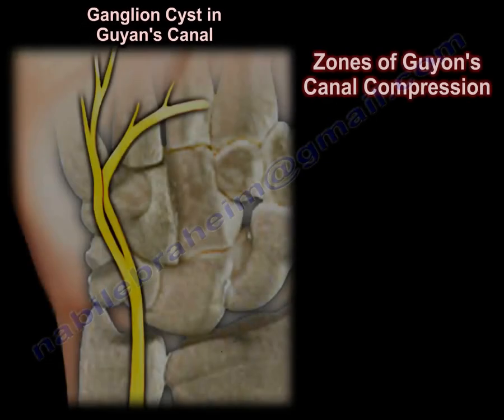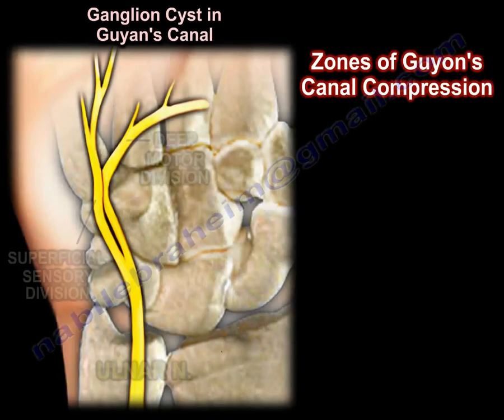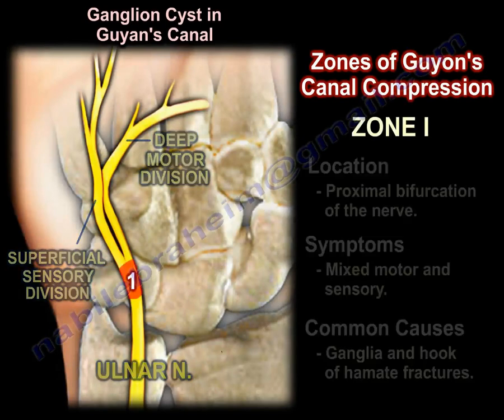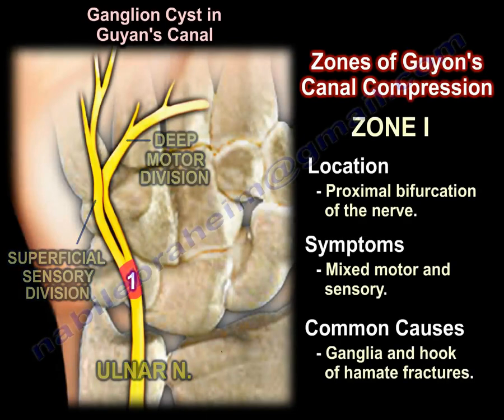There are zones for Guyon's canal compression. Zone 1 is located at the proximal bifurcation of the nerve. The symptoms will be mixed motor and sensory, and the most common causes are a ganglion cyst and the hook of hamate.